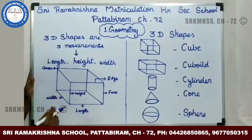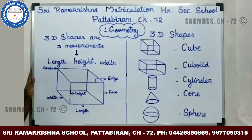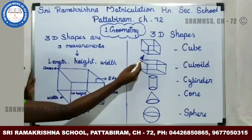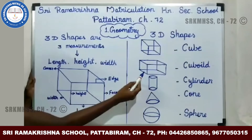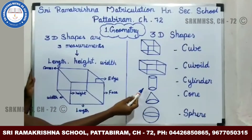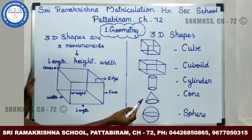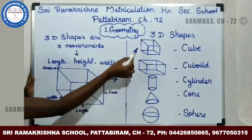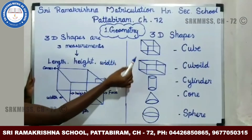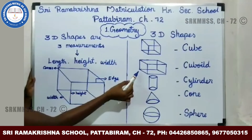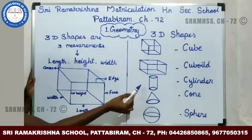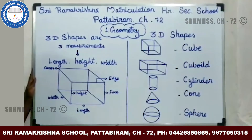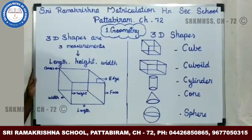Some examples of 3D shapes are: cube, cylinder, cone, and sphere. Thank you, children.